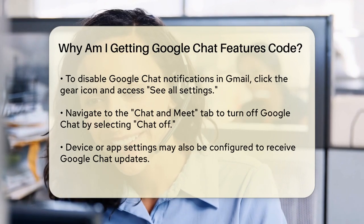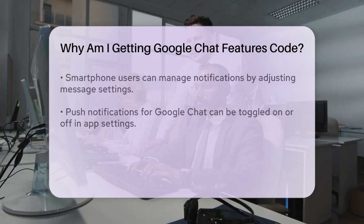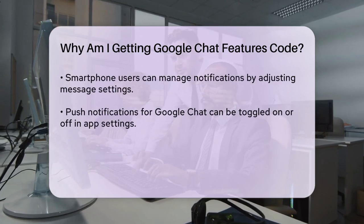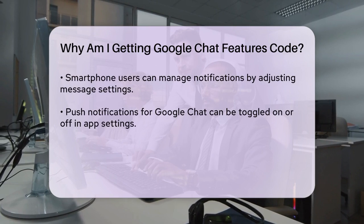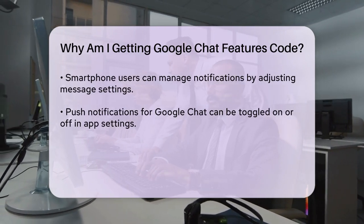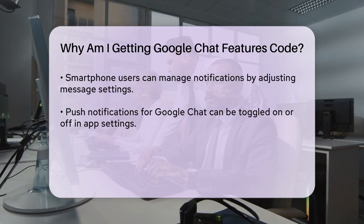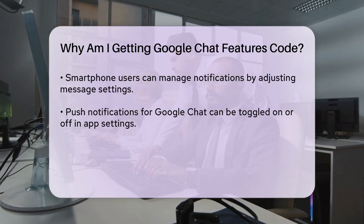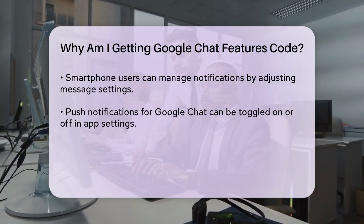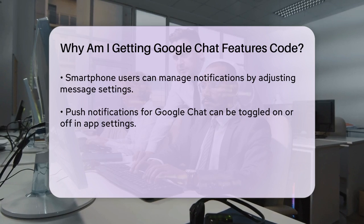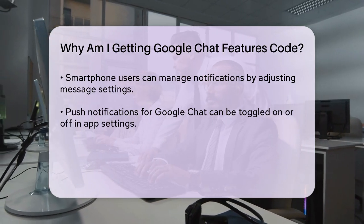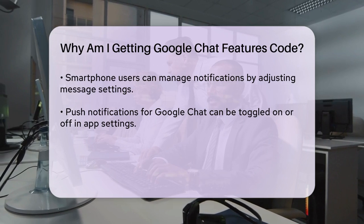Another reason for these notifications could be that your device or app settings are configured to receive updates about Google Chat. For example, if you have Google Chat enabled on your smartphone, you might receive push notifications about new features or updates. You can manage these notifications by going into your message settings and toggling off the button that activates or disables these notifications.